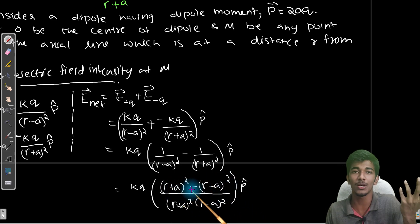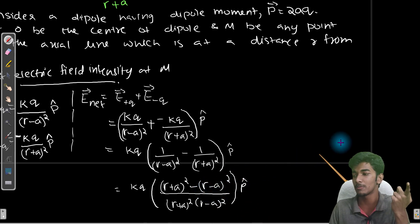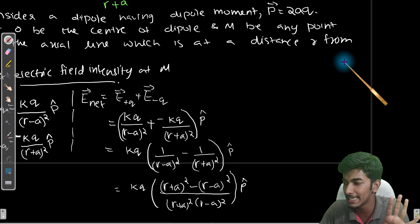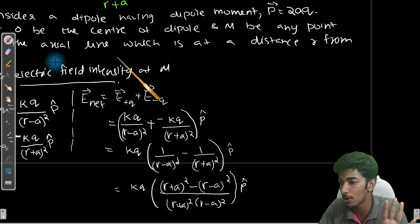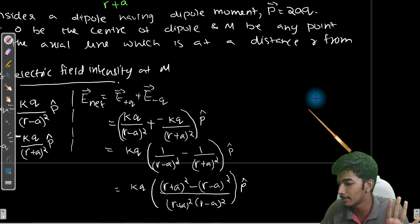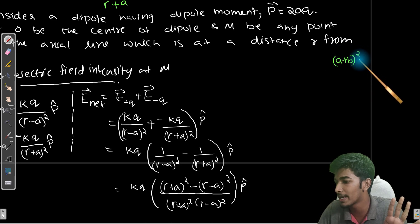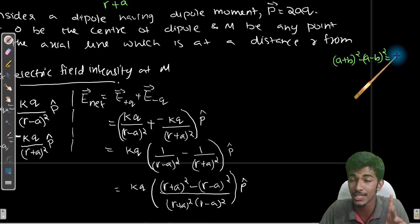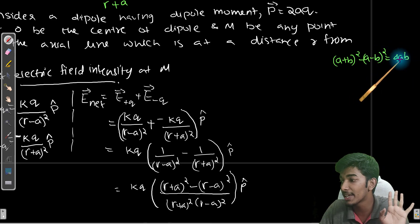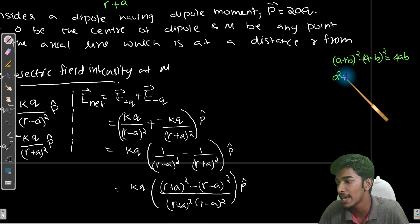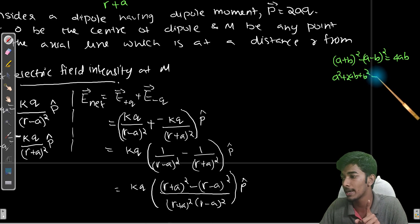We use the algebraic identity: (A plus B) whole square minus (A minus B) whole square equals 4AB. Expanding: A² plus 2AB plus B² minus (A² minus 2AB plus B²) gives us 4AB, after A² and B² terms cancel.